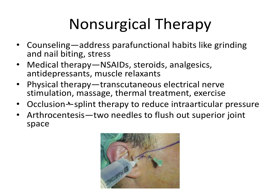Occlusal splints can reduce intra-articular pressure — in minor cases, biting down on popsicle sticks on both sides can unload the jaw and relax the muscles. Arthrocentesis involves using two needles to flush out the superior joint space. You puncture the capsular ligament to access that space, flush in saline with one syringe, and flush out through the second needle to clean out the joint space.